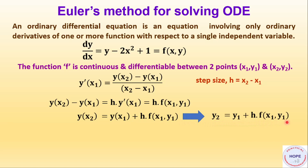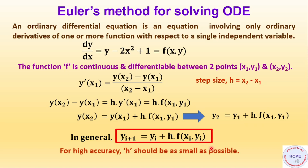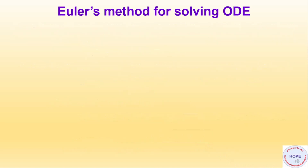From the rearrangement, y2 equals y1 plus h·f. In general, y(i+1) equals y(i) plus h·f. For high accuracy, h should be as small as possible.